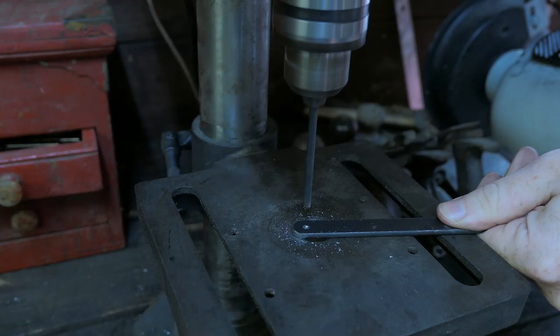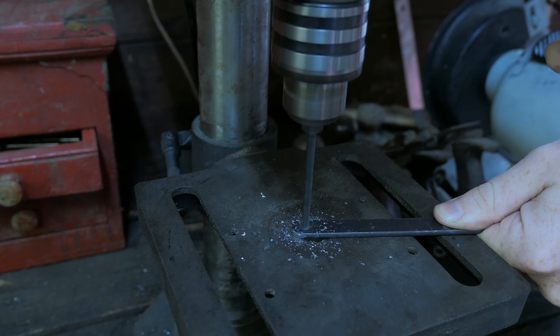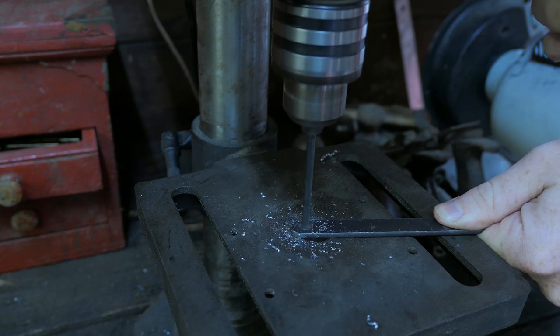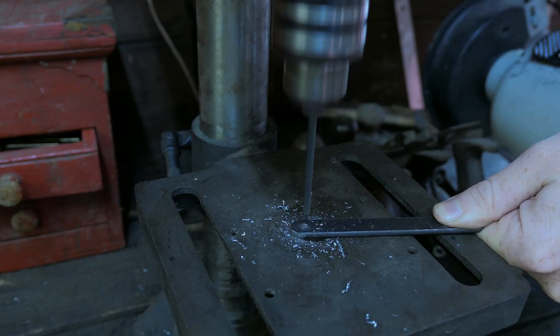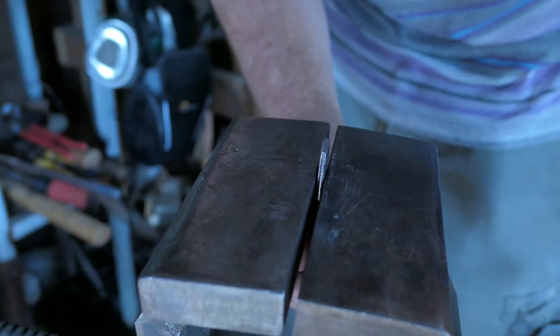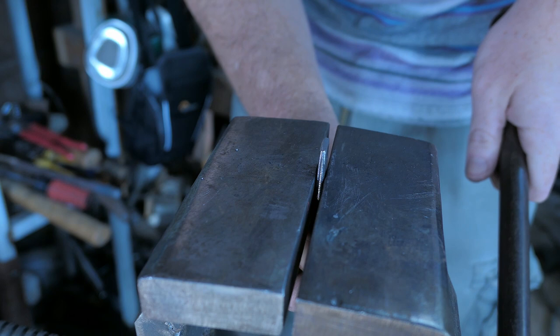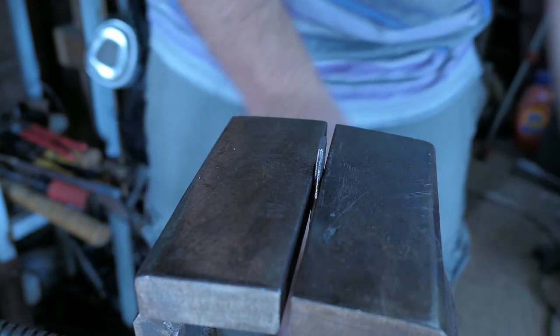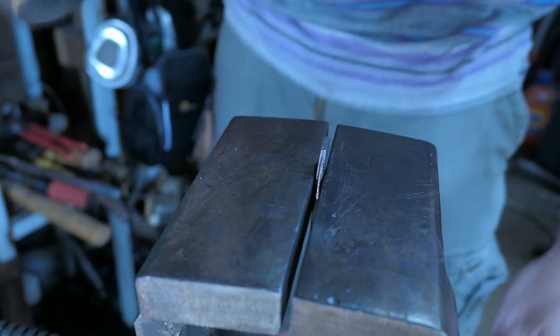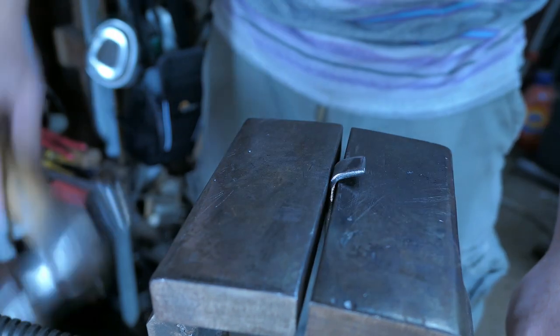Then I'm going to drill some one-eighth holes on the rounded end of the bars for the mounting screws later on. Now I'm going to clamp the ends of the bars in my vise and bend over about a half-inch section on either side. And I really just kind of eyeballed the angle, but it's just shy of 90 degrees, seems to work out well for the leg length.